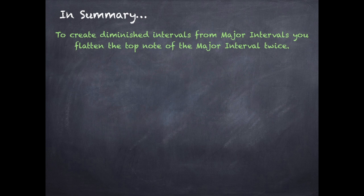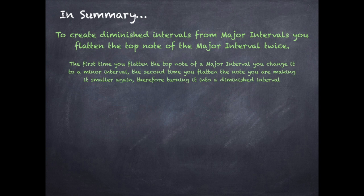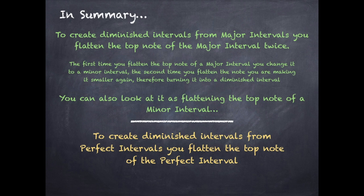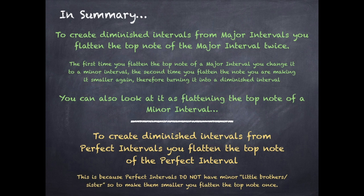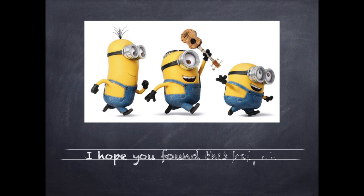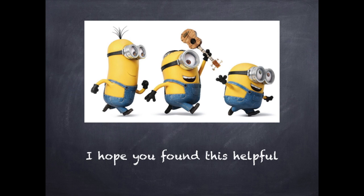In summary, to create diminished intervals from major intervals, you need to flatten the top note of the major interval twice. The first time you flatten it, you change it to a minor interval. The second time, you are making it smaller again, turning it into a diminished interval. To create a diminished interval from a perfect interval, you flatten the top note of the perfect interval once — because perfect intervals do not have minor versions. Hopefully you found this video helpful and now you can understand how diminished and augmented intervals are created.